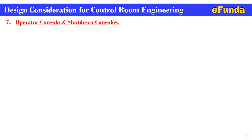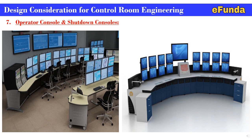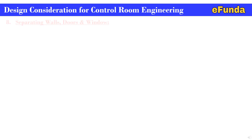The operator console and shutdown console are shown in photographs. Operator consoles are shown in both photographs, and shutdown consoles are also shown. Operators sit here to maximize their efficiency — enhancing production by controlling and monitoring operation from the control room without going to the plant. Operator consoles and shutdown panels help to smoothen the controlling and monitoring operation of the entire plant.